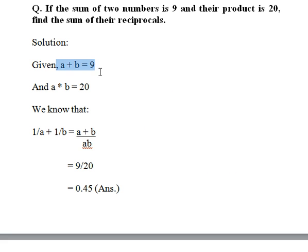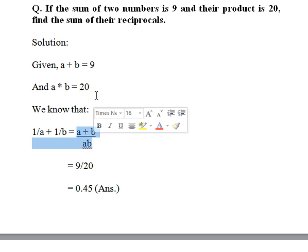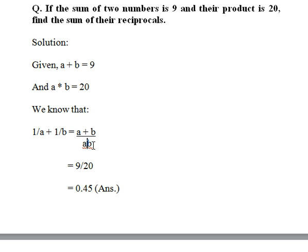A + B = 9, and A × B = 20. We know that the reciprocals are written as 1/A + 1/B = (A + B)/AB. So we know the value of A + B and the value of AB. We get the answer as 9/20, which in decimal is 0.45.